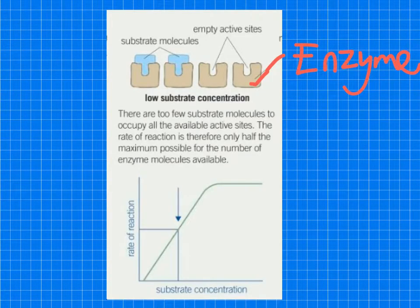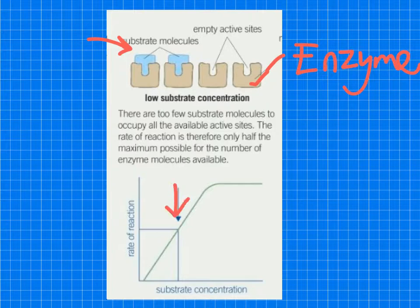So when we have a low substrate concentration, you can see the substrate molecules here are fitting in a complementary fit to the active site of the enzyme and they're colliding with the enzyme. But as it says there, there's too few substrate molecules to occupy all of the available active sites. So therefore it's limited. And it says, therefore, only half the maximum possible for the number of enzyme molecules is available. So at this point here, it is limited by the substrate concentration.